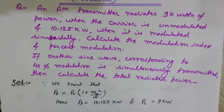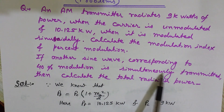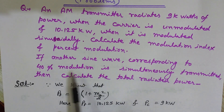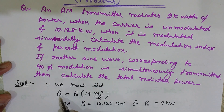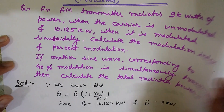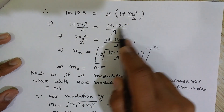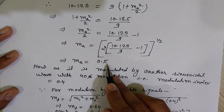Pt is given as 10.125 kilowatts and Pc as 9 kilowatts. Putting these values into the equation, I can solve for ma²/2, and then calculate ma. The result is ma equals 0.5. That is the modulation index for the first part of the question.